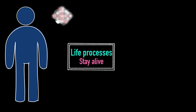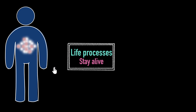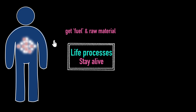Food also contains certain raw materials needed for our body to grow and to build muscles. When I was born I was pretty small and skinny, but now I'm all grown up and muscular — all that came from the raw materials I got by eating food for so many years. So food gives me raw materials and my fuel. After eating and swallowing food, my digestive system extracts all the necessary fuel and raw materials needed for my body. Getting this fuel and raw material is one of the important processes I need to keep doing to stay alive.